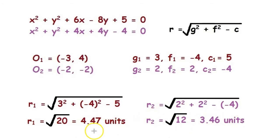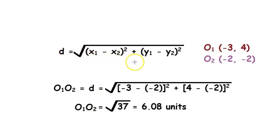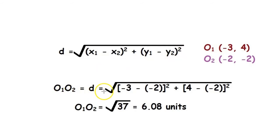For the distance between the centers, we use the distance formula: D equals the square root of (X1 − X2)² + (Y1 − Y2)², where X1, Y1 are the coordinates of the first center and X2, Y2 are the coordinates of the second circle's center. So D equals O1O2, which equals the square root of (−3 − (−2))² + (4 − (−2))², giving us the square root of 37, which is approximately 6.08 units.